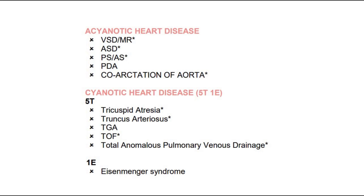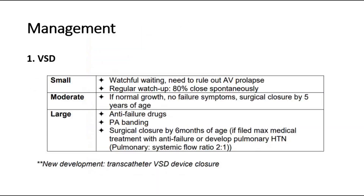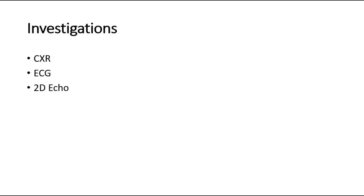This is a common question that might be asked by the examiner. Other conditions would be acyanotic heart disease, which won't cause any cyanosis. The examiner might also ask what investigations you would like to do to confirm your diagnosis. The three main investigations in the cardiovascular station would be chest X-ray, ECG, and a 2D echocardiogram to look at the heart defect.